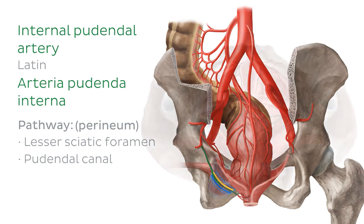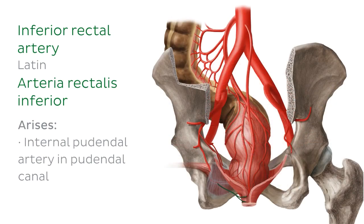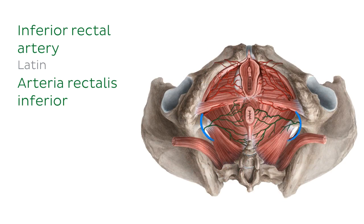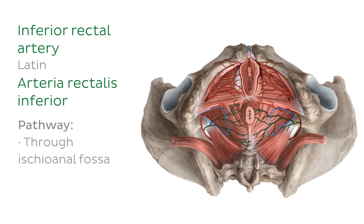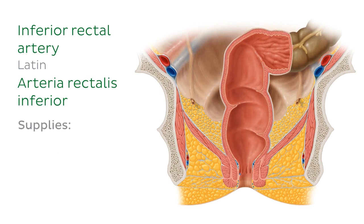The first branch of the internal pudendal artery is the inferior rectal artery, now highlighted in green. It arises just after the internal pudendal artery enters through the lesser sciatic foramen, within the pudendal canal. The inferior rectal artery divides into two or three main branches which run anteromedially through the ischioanal fossa. Looking at this coronal section of the rectum and anus, the inferior rectal artery supplies the inferior part of the anal canal below the pectinate line, which separates the superior and inferior parts of the anal canal.